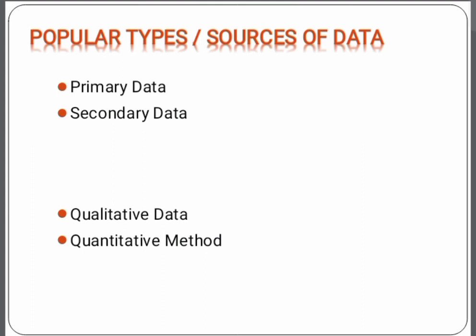Quantitative data entails measurement in which numbers are used directly to represent properties of things. It is ready for statistical analysis. So these are the qualitative data and quantitative data.